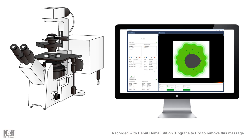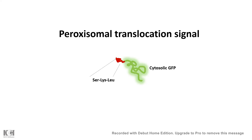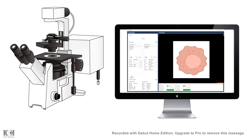More specific experiments used a cytosolic GFP, which normally stays in the cytosol and glows uniformly under a fluorescence microscope. When scientists attached a peroxisomal translocation signal to the cytosolic GFP, instead of remaining in the cytosol the GFP was transported to the peroxisomes — visible as distinct speckles inside the cell that are GFP-positive, meaning the peroxisomes are now highlighted by GFP.